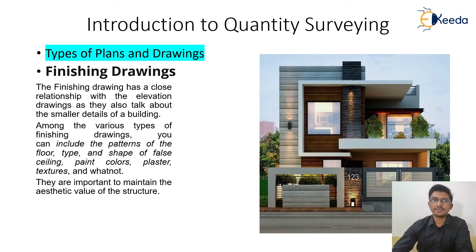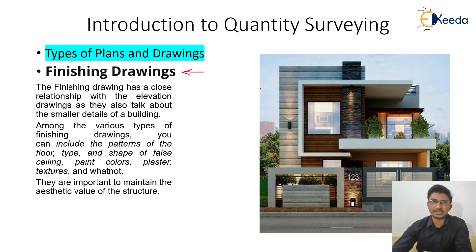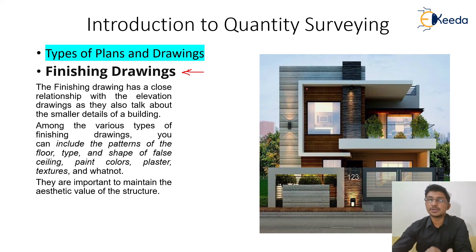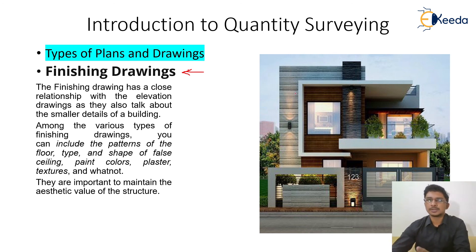The last drawing is the finishing drawings. These give an idea of how the building will look at the end and what materials will be used inside and outside for finishing. A more aesthetic building costs more, and the finishing drawings provide minute details — painting, plastering, false work, hanging bulbs, cladding, tiles, paper blocks, and anything related to finishing inside and outside the house.